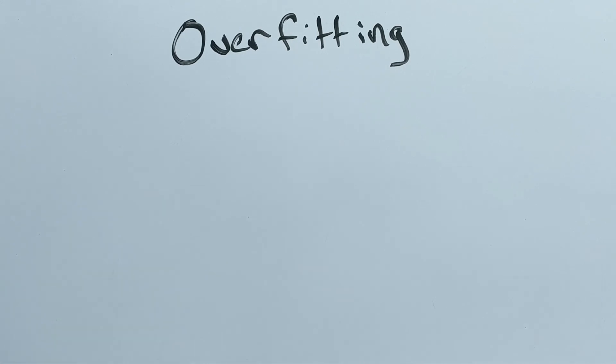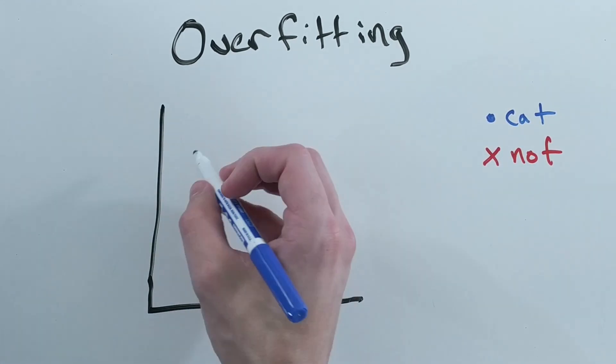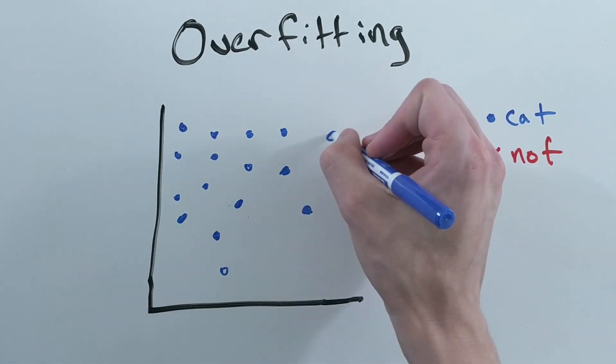Overfitting is when your model overcorrects to match or to memorize your data set. Let's say you have a model where you are trying to say if there's a cat in a picture or not.